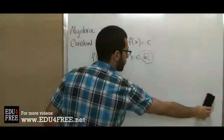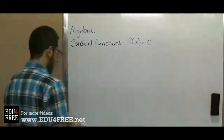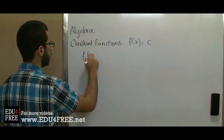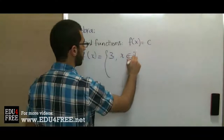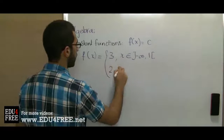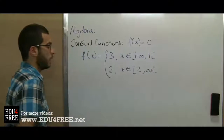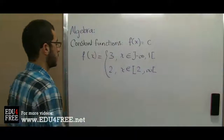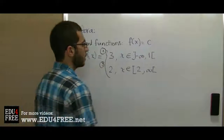If we have a function defined over two or three intervals — for example, f(x) = 3 when x belongs to (-∞, 1) open, and f(x) = 2 when x belongs to [2, +∞) closed — this function is divided into two parts: function number one and function number two. To graph this function, we do the following.